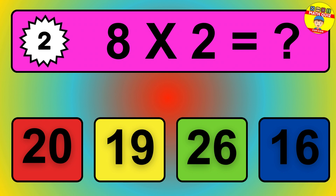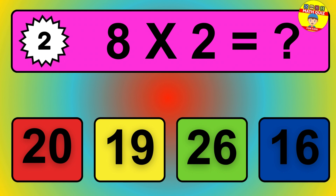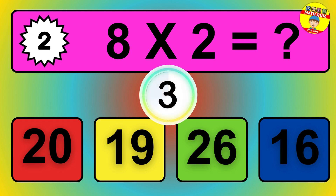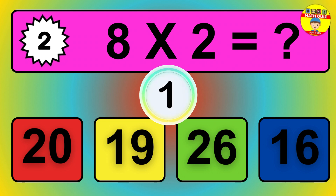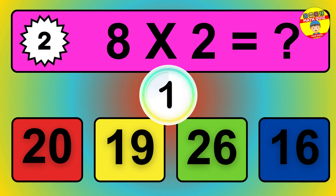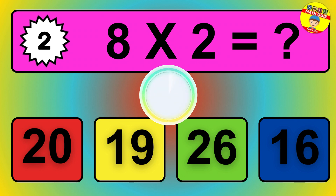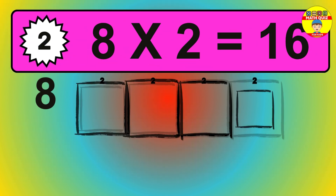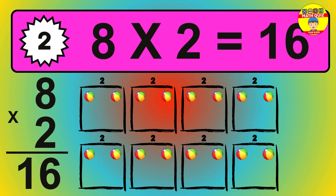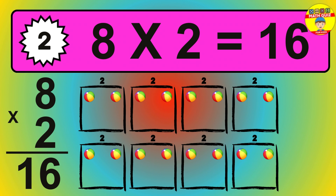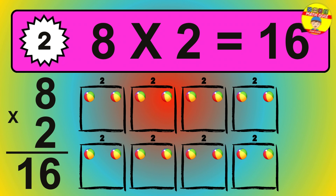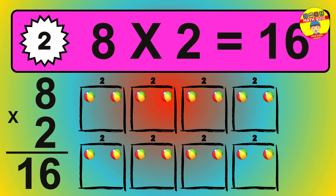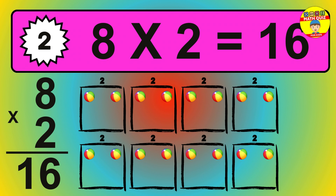Question 2. 8 times 2 equals what? The answer is 8 times 2 is 16. To calculate, we have 8 groups with 2 balls each one. So, how many balls do we have? 16 balls.